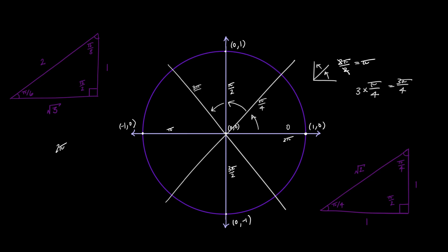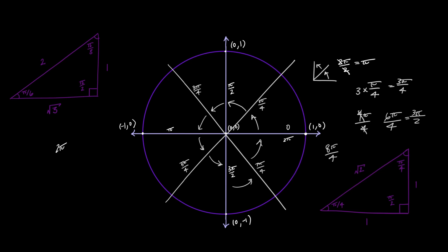Going to 4 pi over 4 cancels down to pi, reaffirming what we got before. Continuing: 5 pi over 4, then 6 pi over 4 which reduces to 3 pi over 2 confirming that result, then 7 pi over 4. If we were to go one last time, we'd have 8 pi over 4 which reduces to 2 pi, confirming what we knew before.